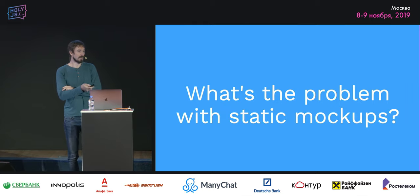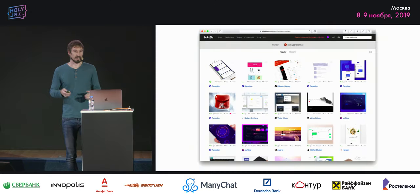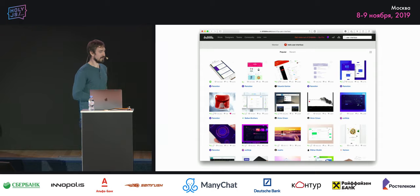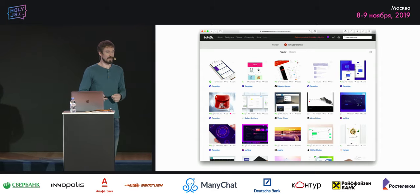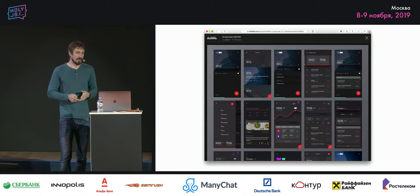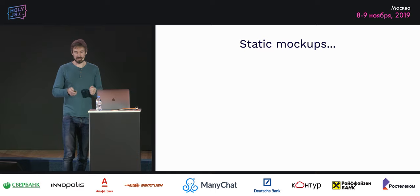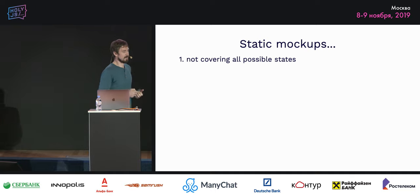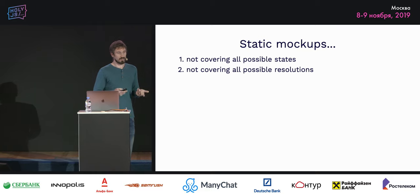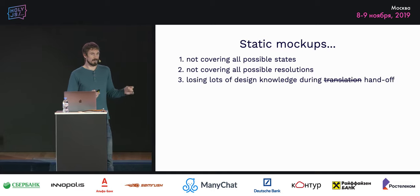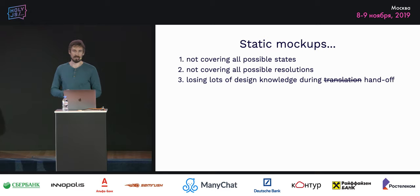What's the problem with static mockups? They're beautiful — Dribbble is an endless source of inspiration with beautifully crafted images of user interfaces that you can't use, because they're images. Even the most detailed ones are still images you can't interact with. Static mockups will never cover all the possible states of your user interface, and they'll probably never cover all screen resolutions. During handoff, lots of design knowledge is lost because of their static nature.